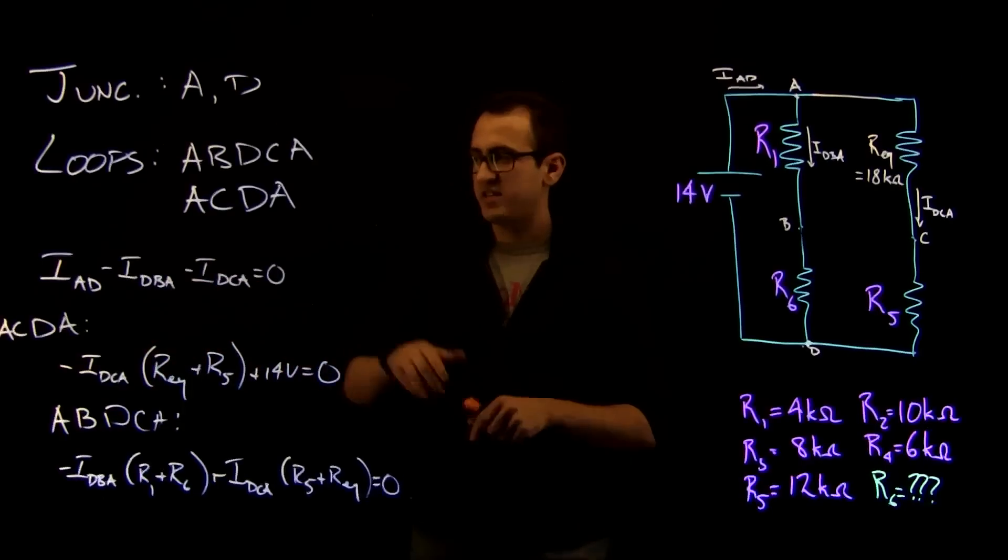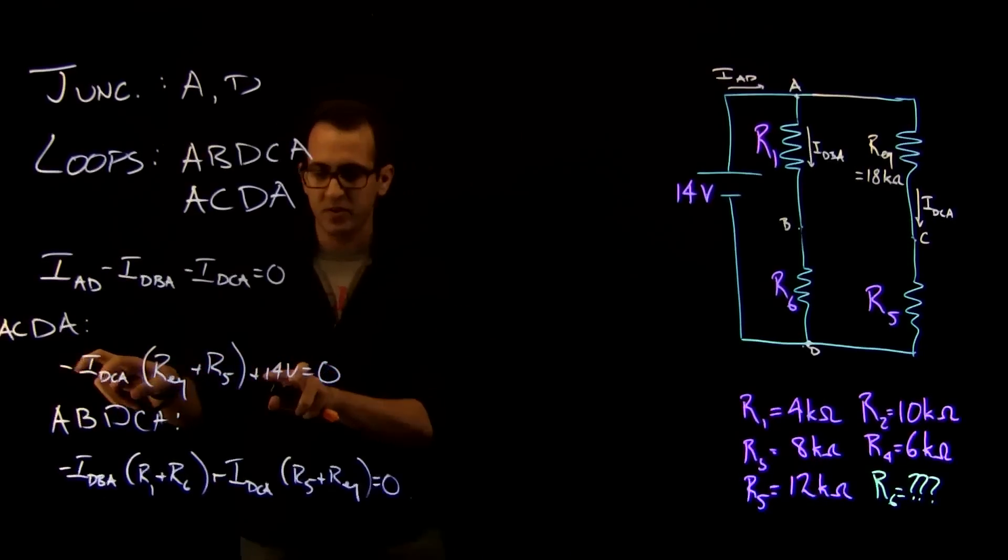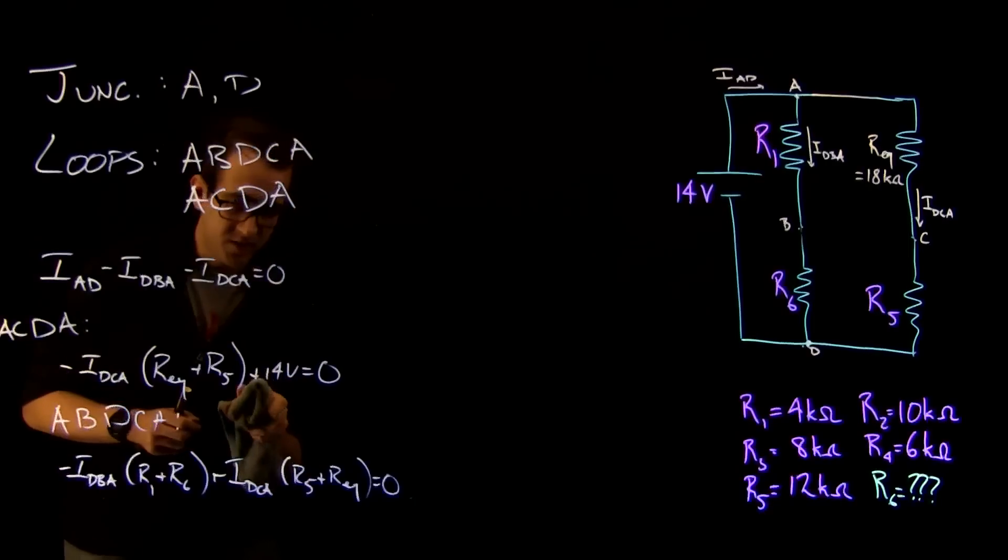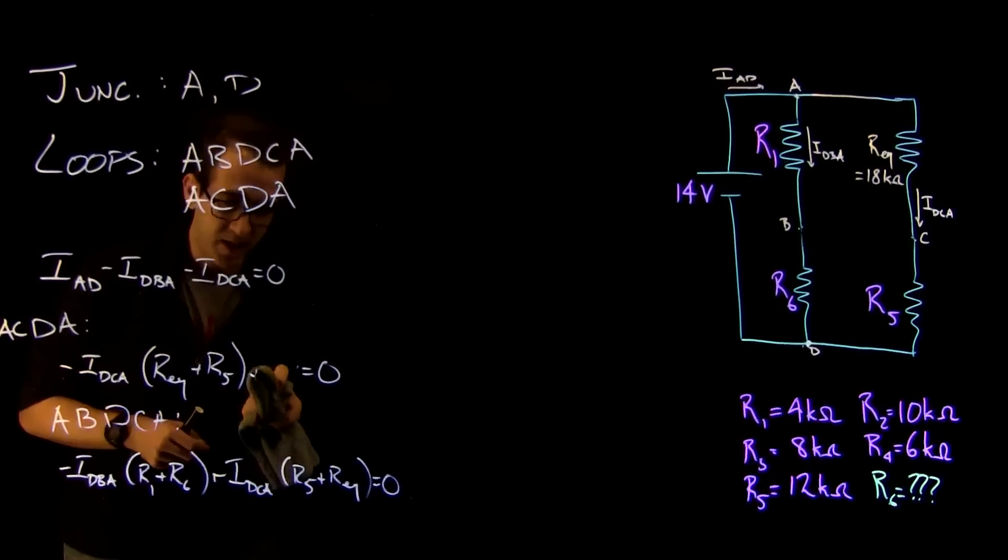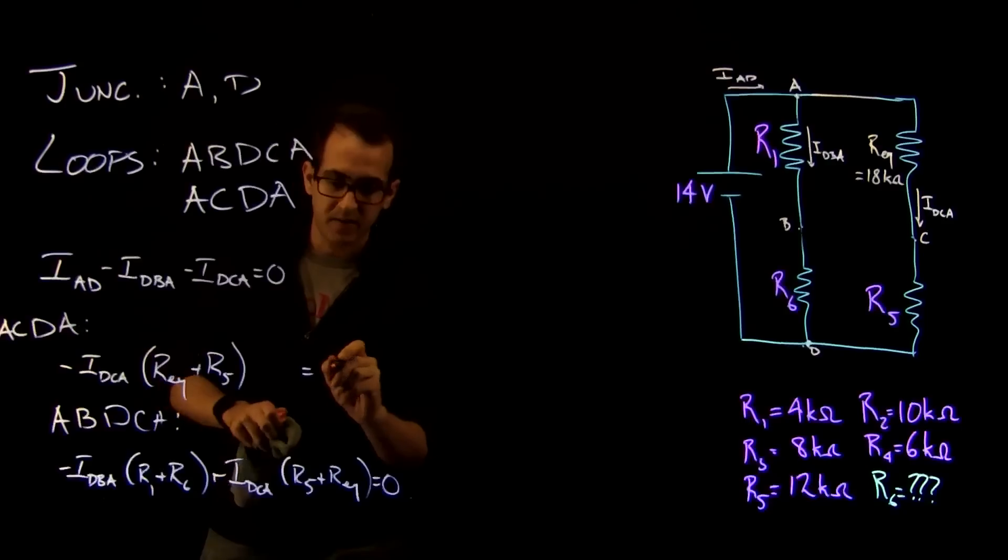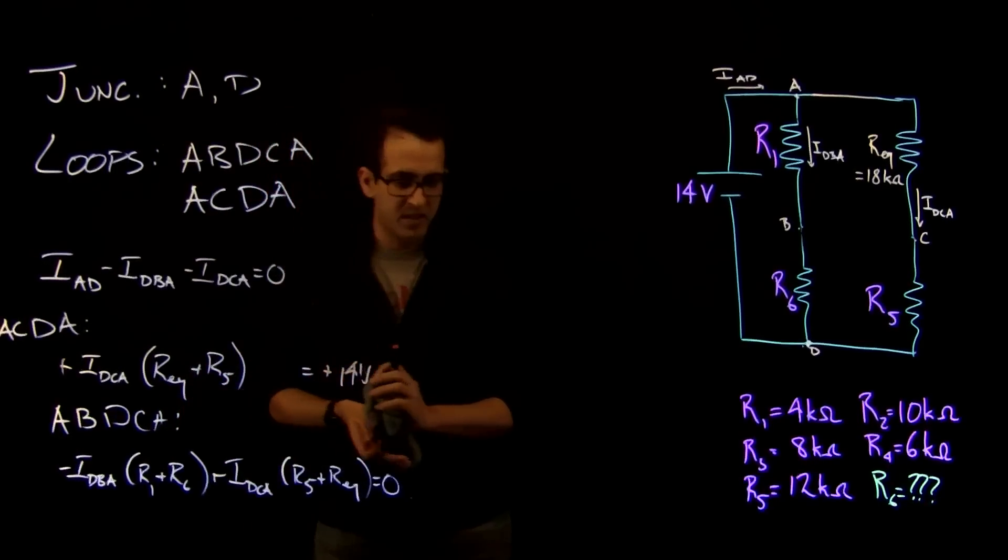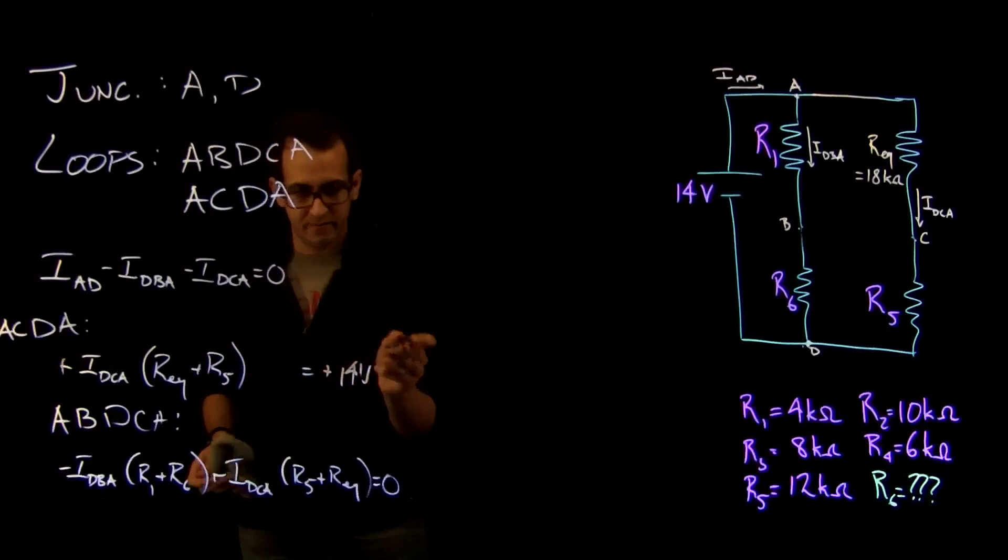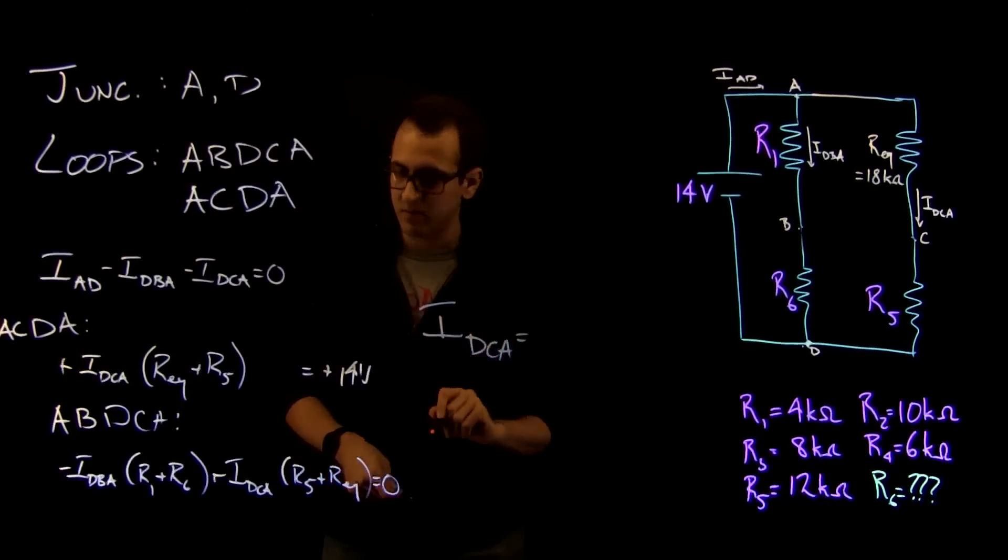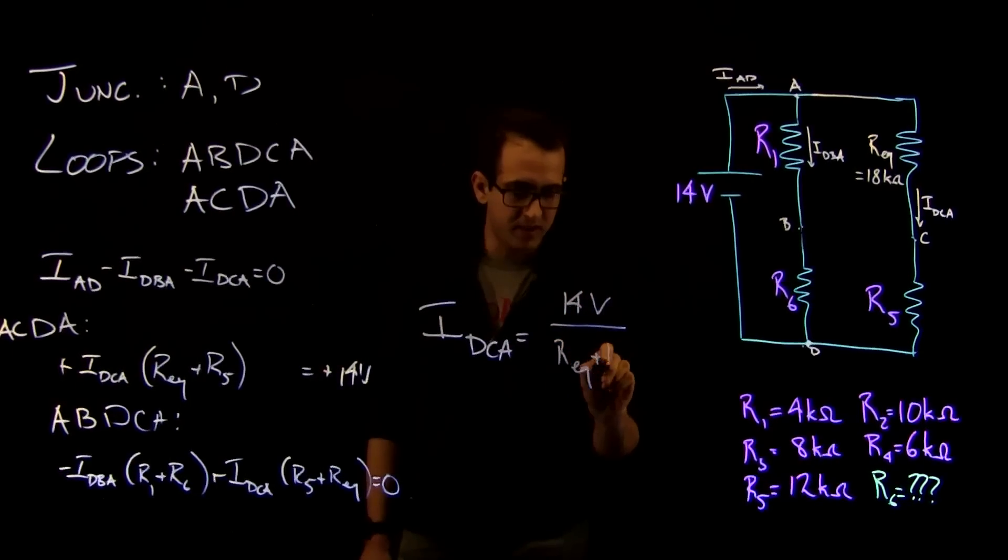So the first thing we should do is we should solve this ACDA loop equation. What we're going to do is we're going to subtract 14 volts from both sides and multiply by an overall sign. And now we know REQ, we know R5, we clearly know 14 volts. So we can solve for IDCA. So IDCA is equal to 14 volts over REQ plus R5.